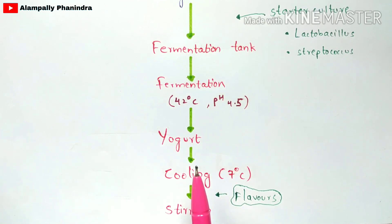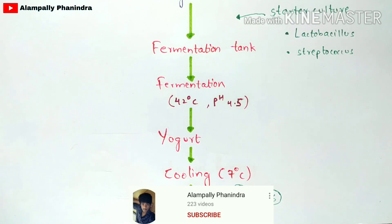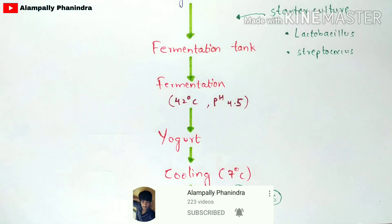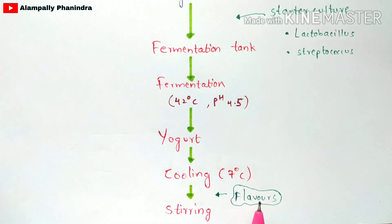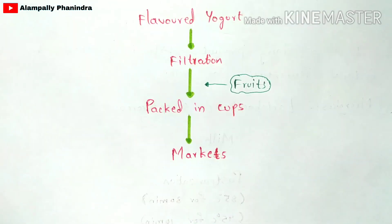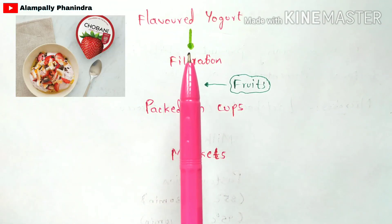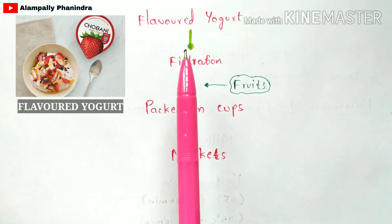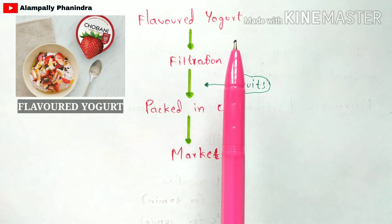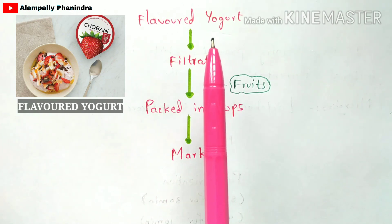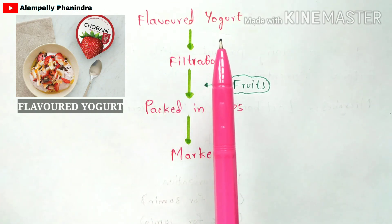After cooling, the yogurt is removed from the refrigerator and continuously stirred. During stirring, flavors such as vanilla or strawberry are added to the yogurt. Stirring continuously while adding these flavors leads to the production of flavored yogurt.